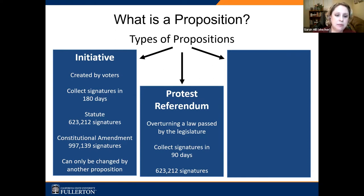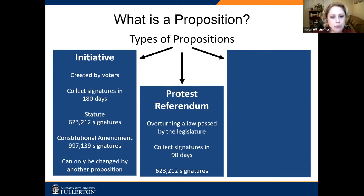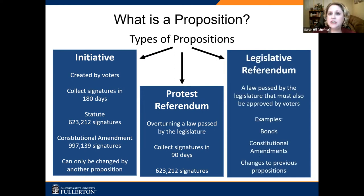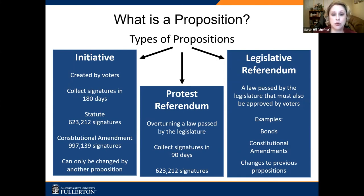Both the initiative and protest referendum are what we call direct democracy — where it's the people having a say in policymaking — and only about half of the states allow for that. California tends to use it a lot more than almost anybody else. The last way we get a proposition on the ballot is through a legislative referendum. This is something the legislature passes that is required to go to a vote of the people — for example, if it's an amendment to the state constitution, or if it's bonds or changes to previous propositions. We have one of those this time.